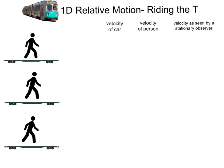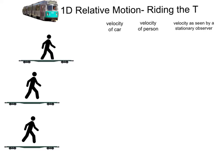Imagine you're riding the Green Line in Boston, and you're just sitting on the train. What if the train is moving at 10 meters per second? How fast does an observer outside the train see you moving? If the train is moving 10 meters per second and you're sitting stationary on the train, we would observe this motion.